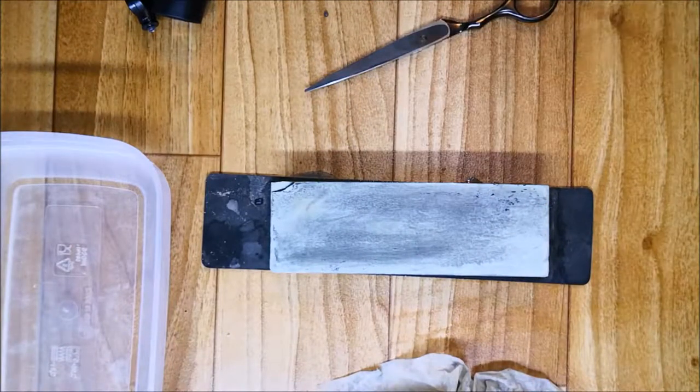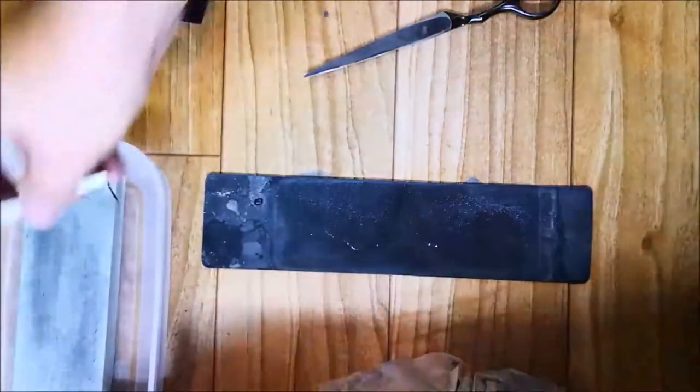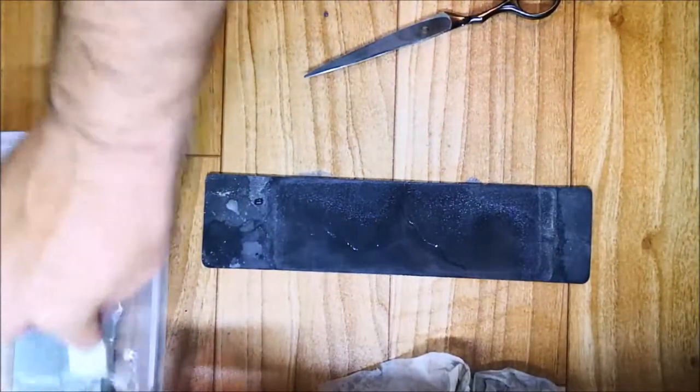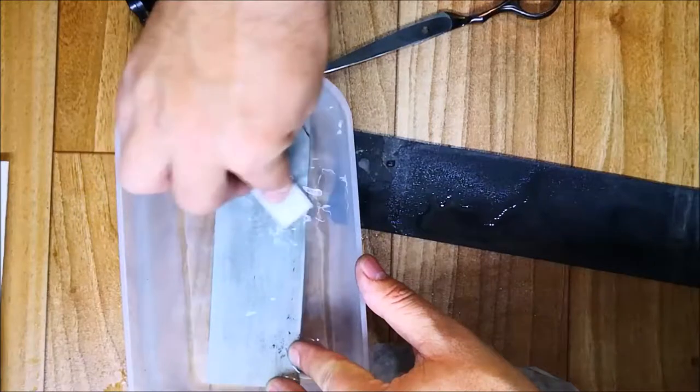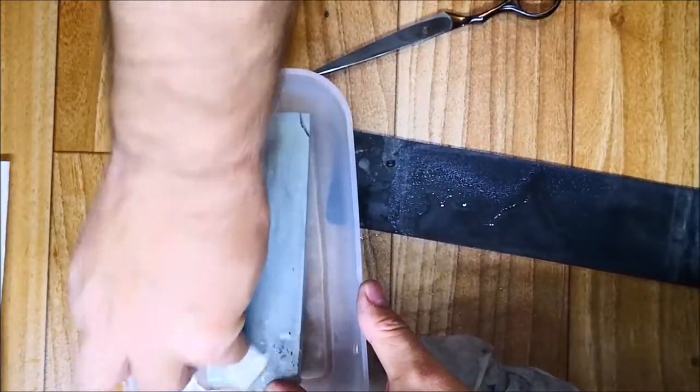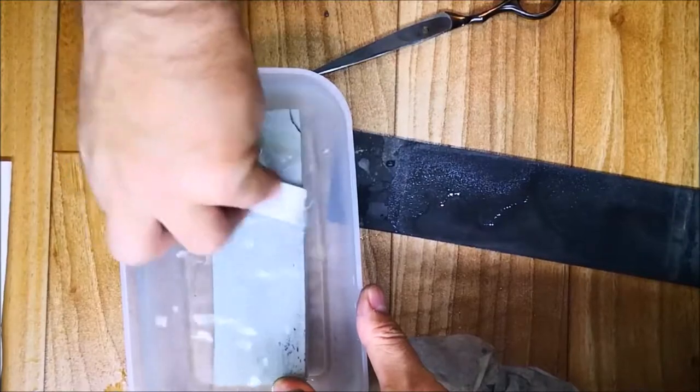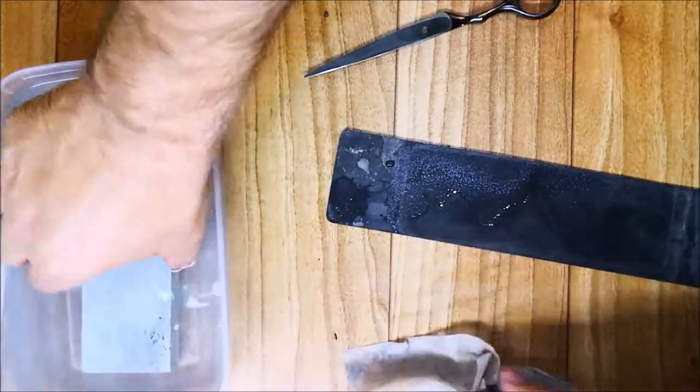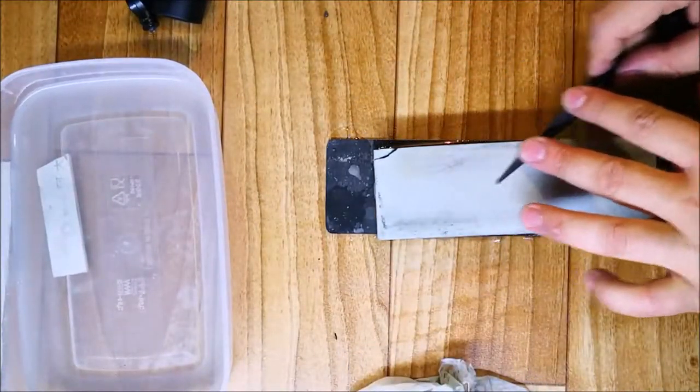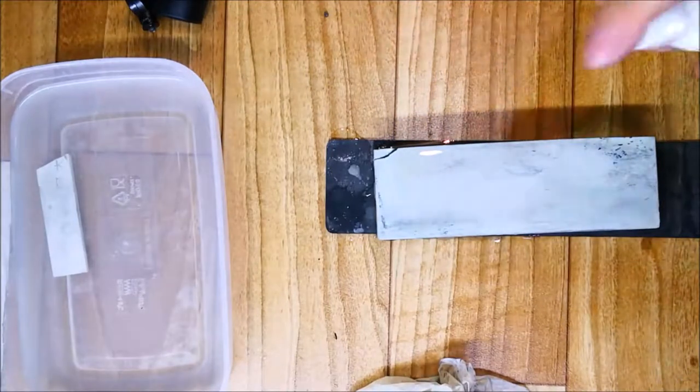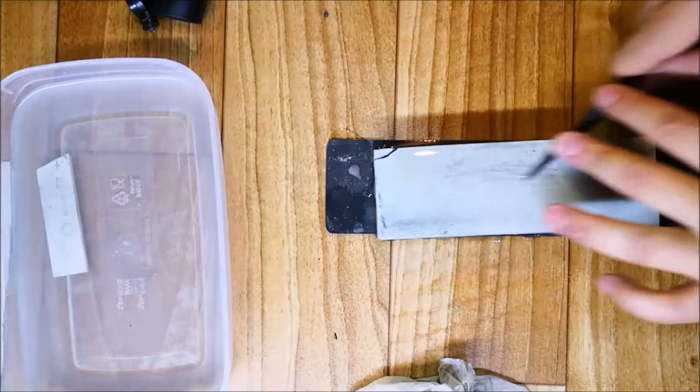At this moment you might end up in the same situation where the stone gets clogged and it's not cutting anymore. What I do is I put it back in the water and use another Nagura stone. Just rub it on the surface to get rid of all this residue. Then we continue sharpening. As you can see, the stone now works much better.